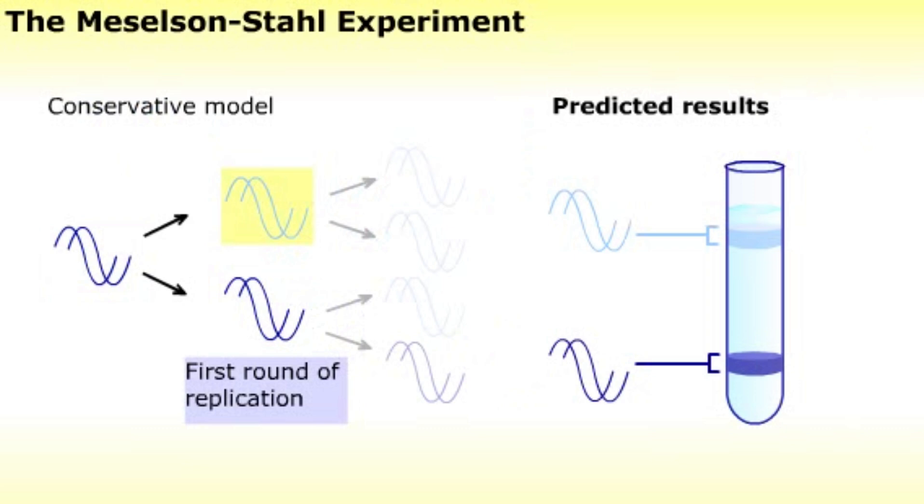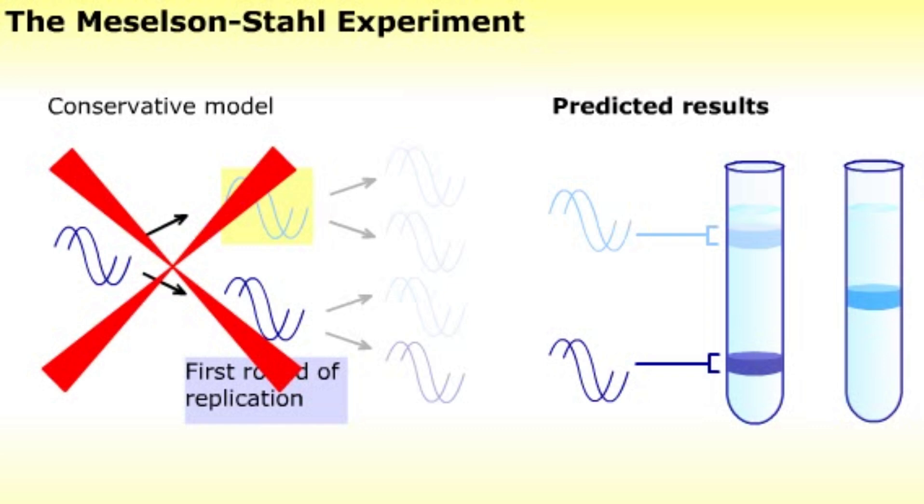If this model were correct, Meselson and Stahl would have seen a band for the heavy DNA and a band for the light DNA. Since they saw one DNA band of intermediate density, the conservative model cannot be correct.